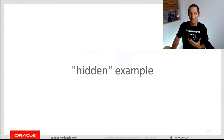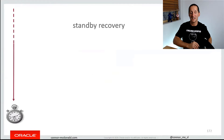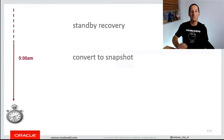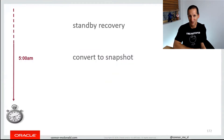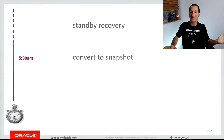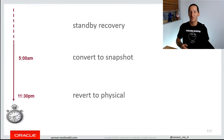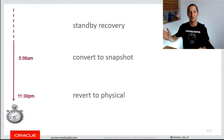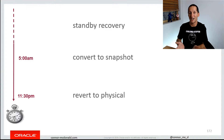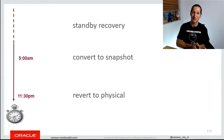One hidden example we use ourselves is with a Data Guard standby database. A lot of people are unaware you can open a standby database in read-write mode — you can convert it to a snapshot standby. That actually opens the database read-write and breaks its link with the primary. You might think that's a problem — how do I get it back in sync? At 11:30pm, you do what's called a revert to physical, which flashes the database back to 5am and then hooks it up with the primary again and continues rolling forward. This lets you get a lot of leverage from your standby — open it read-write during the day for reporting, examining, or testing application rollouts, then revert it back to physical and sync up with the primary without having to recopy all the data files.